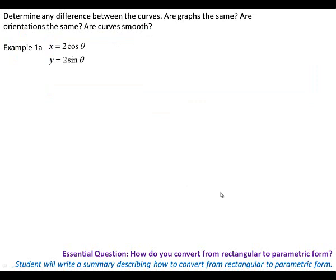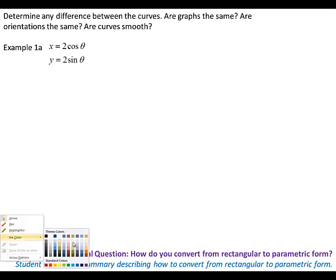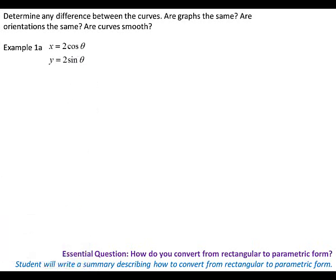Notice it's broken into four parts. So what we're going to do is we're going to do each one of these sets of equations — we're going to find the rectangular equation and we're going to graph it and look at the orientations, and then decide if the curves are smooth or not. I'm going to start by getting it into rectangular form, and then we will go ahead and put it into the calculator parametrically.